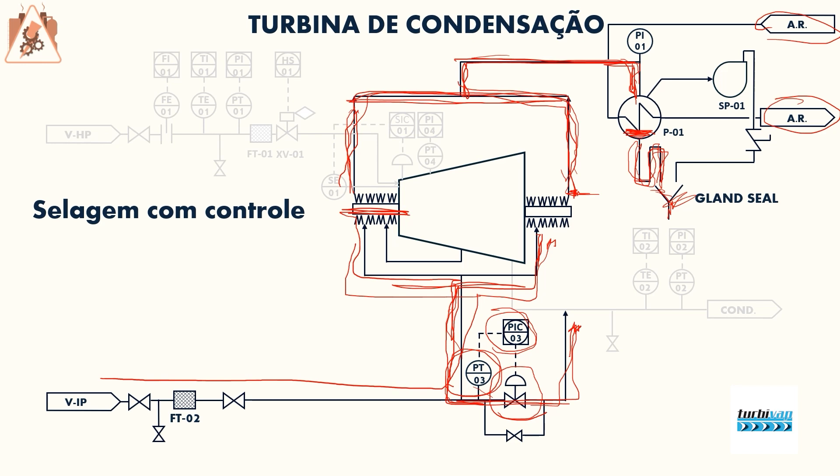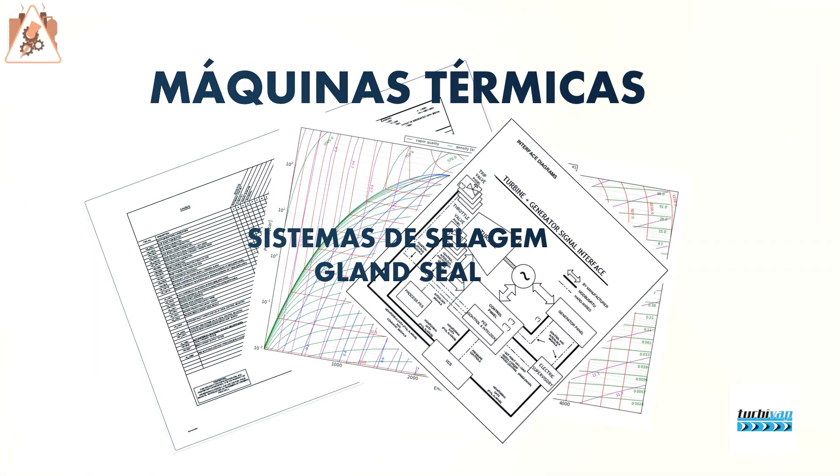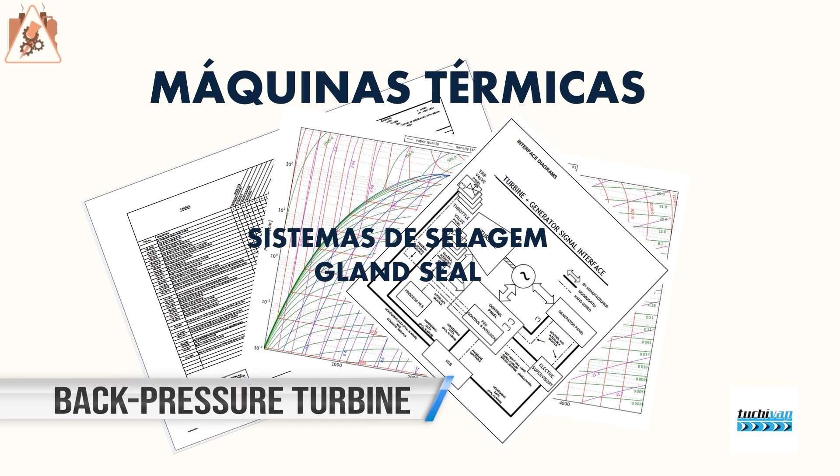API 612 requires that a condensation system be introduced into the turbine to prevent steam from contaminating the lubrication bearings. The non-condensables are then separated inside the exchanger and directed to a vacuum pump or an air blower.